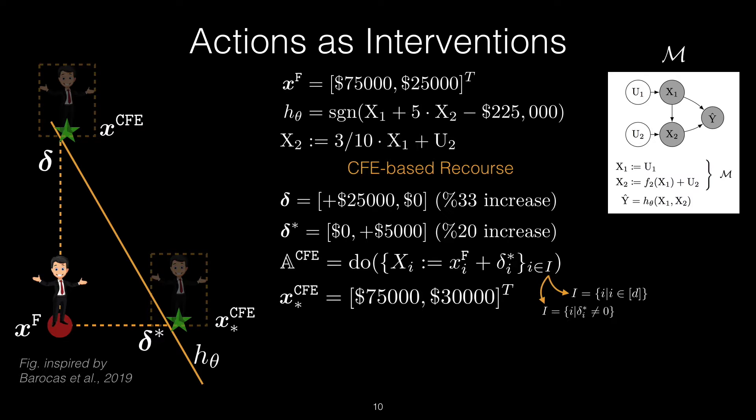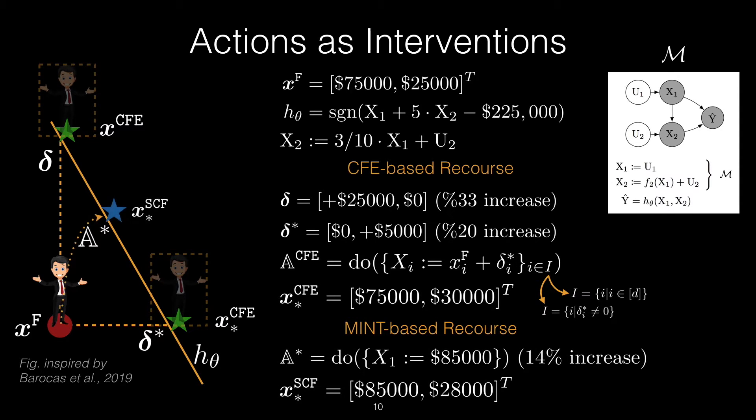This results in the point x*^CFE, as we see on the bottom right in the figure. But we observe that there is a better solution, as shown by the blue star or x*^SCF, which stands for structural counterfactual, which only requires a 14% relative effort on the variable x_1 in this example, as compared to a 33% effort on x_1 or 20% effort on x_2 in the CFE-based recourse actions. This is because a* is obtained by making use of the information about dependencies between variables as captured in the causal model M.